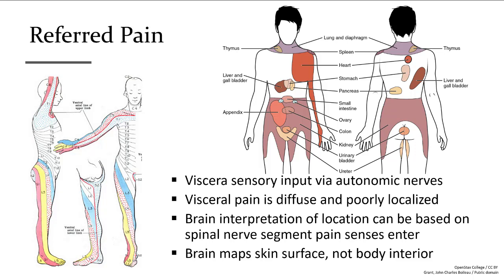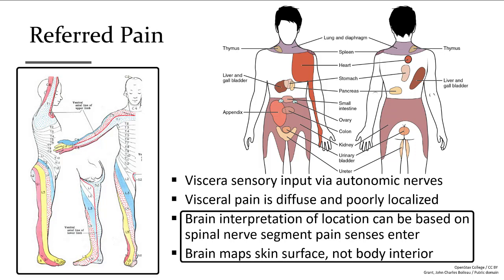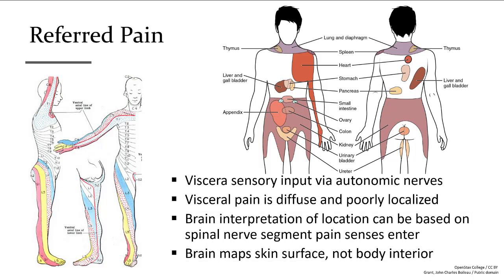Referred pain is much different from the body map we have for sensory sensations of the skin surface. Referred pain comes from our autonomic organs, which are not as clearly mapped out in the brain. For example, radiating pain from the left arm is commonly associated with a heart attack, because the brain doesn't have a clear place to identify heart versus lower lung, abdomen, or large intestine. So the brain relies on dermatomes as a body map for pain associated near that region, resulting in often odd placements of referred pain for our autonomic organs.